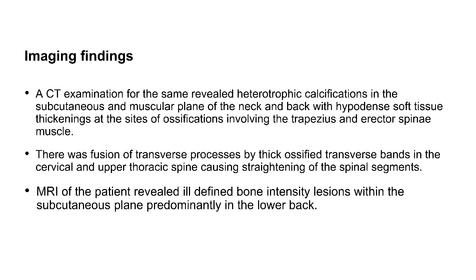A CT examination was done which revealed heterotopic calcifications in the subcutaneous and muscular planes of the neck and back, with soft tissue thickenings at the site of ossification involving the trapezius and erector spinae muscles. There was also fusion of the transverse processes by thick ossified transverse bands in the cervical and upper thoracic spine, causing straightening of the spinal segments.